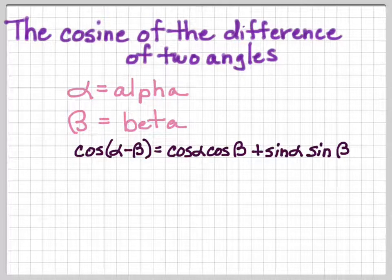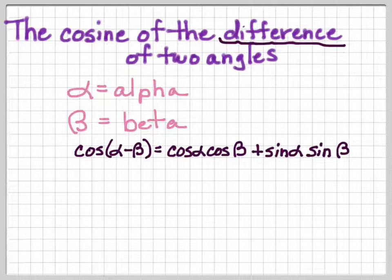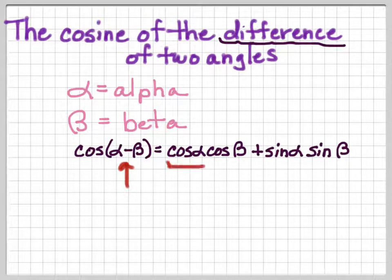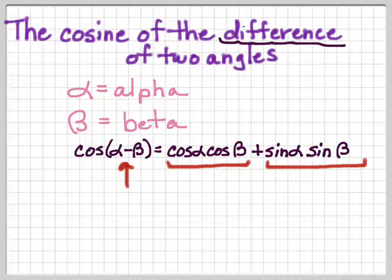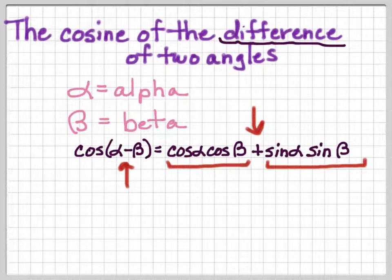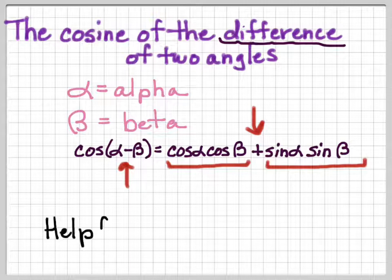Cosine alpha times cosine beta plus sine alpha times sine beta. Now there's a pattern there that you need to recognize and memorize. This is the difference — difference means takeaway. So cosine of alpha minus beta is the difference of two angles, and we have cosine alpha times cosine beta and sine alpha times sine beta. And when we're talking about the difference, we add the two. That's something you need to memorize: when you see cosine of alpha minus beta, you're going to be using a plus in the formula.